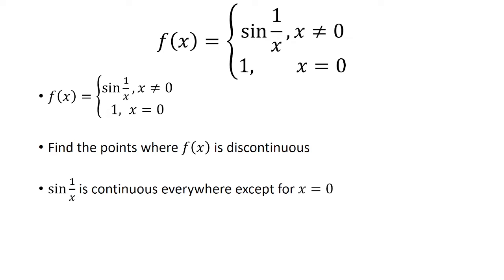So we should focus on what is happening at x equals 0. We want to look at the limit as x approaches 0 of sine of 1 over x, and we're going to compare that to f of 0. If these are equal, then it's continuous at x equals 0.